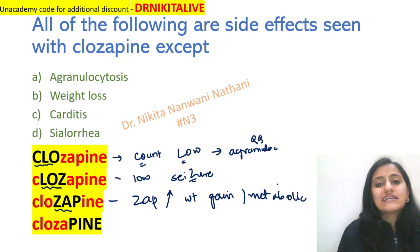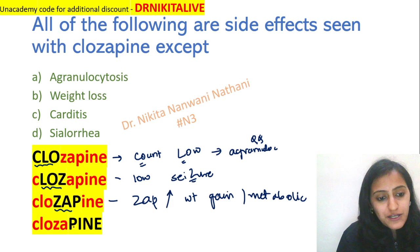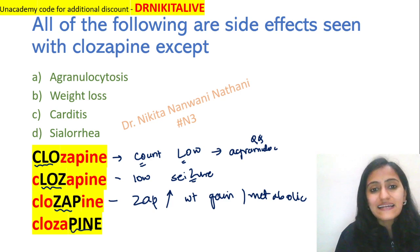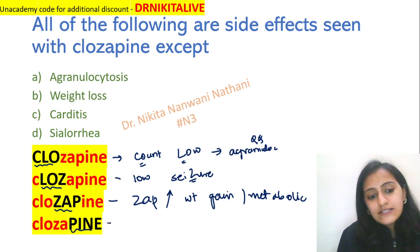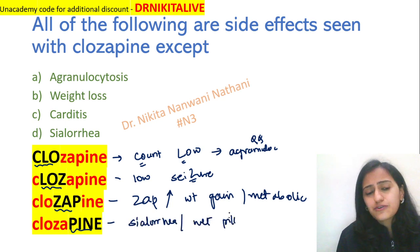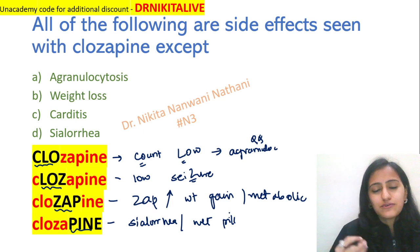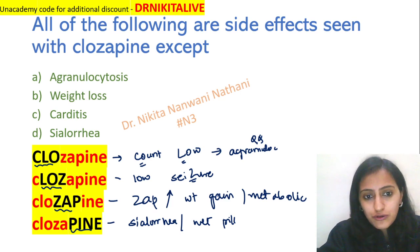Both Olanzapine and Clozapine cause weight gain and metabolic syndrome. Then you have P-I-N-E — 'peene wala,' related to water and saliva — which helps you remember sialorrhea, also called wet pillow syndrome. That is the saliva drooling, sialorrhea, wet pillow syndrome.